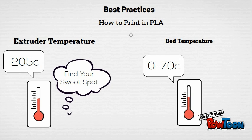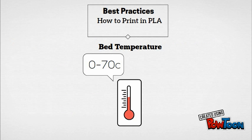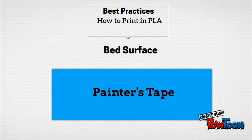The bed temperature for PLA can be zero, but if you want to heat it up between 20 and 70 degrees Celsius it won't hurt. If you have access to blue painters tape, feel free to cover your print bed with one layer, as this will help your prints stick to the platform and create a better print.